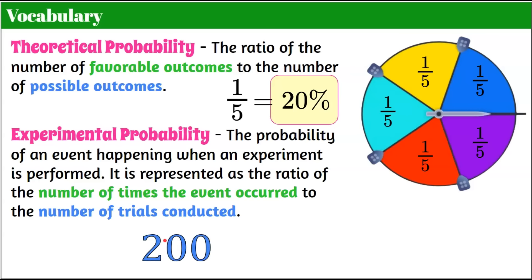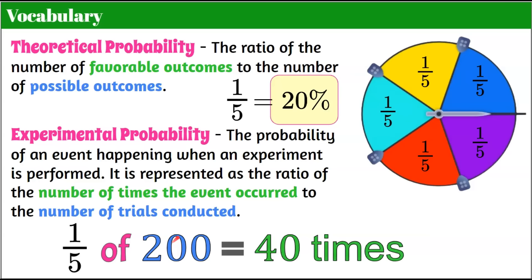Let's say we conduct an experiment with 200 trials. So 200 is our denominator — 200 times we're going to spin the spinner. In theory, 1 fifth of the 200 times would be any color, or 20% of 200. 1 fifth of 200 is 40 times. So we would expect that if we spun the spinner 200 times, it would land on red 40 times and on yellow 40 times — in theory, 1 fifth of the time on any one of these colors, out of 200, should happen 40 times.